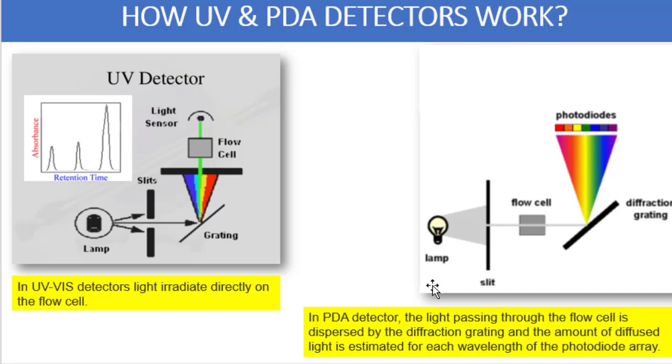Whatever light is emitting from the flow cell will fall onto the diffraction grating. We know what is the function of the diffraction grating: it is going to separate the light at different wavelengths and at different angles. What happens when light leaves grating? It spreads over like a rainbow.